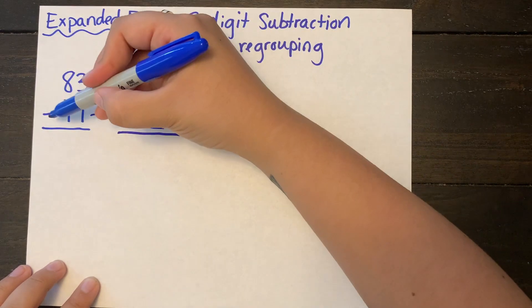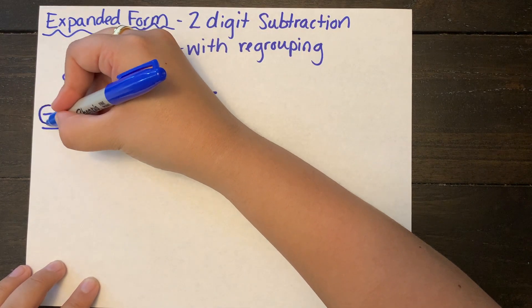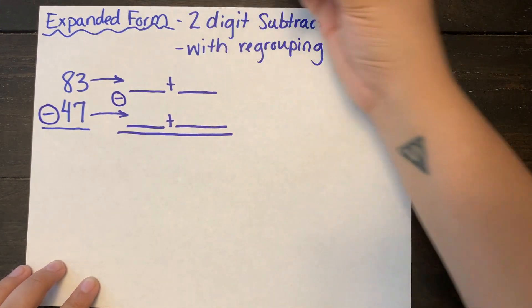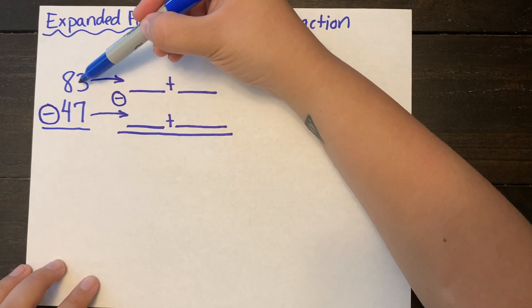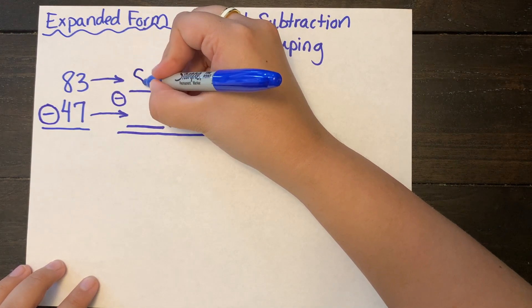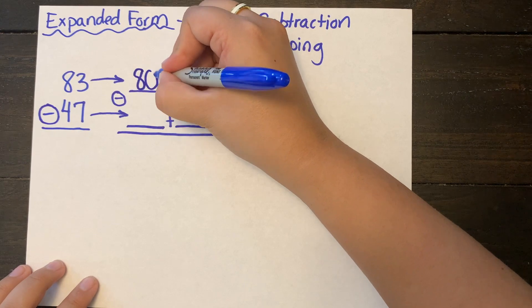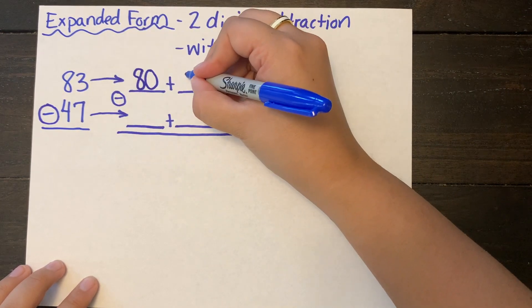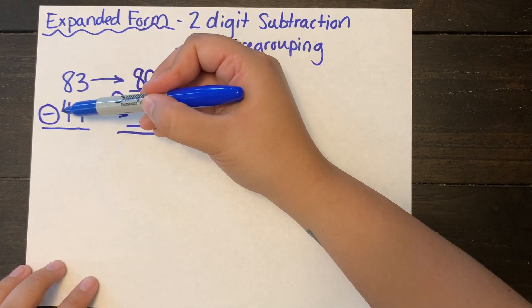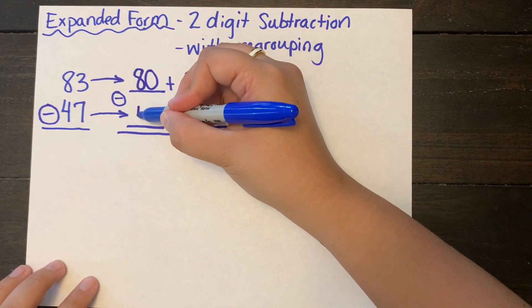So this is a subtraction problem so I'm circling my operation and I'm rewriting it just to remind myself because there are plus signs but they are not used for solving the problem right now. So I'm just expanding out 83 so it's 80 plus 3. Then I'm going to do 47 which is 40 plus 7.